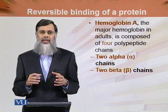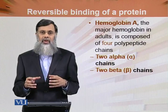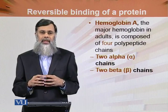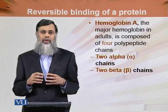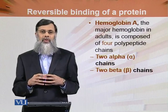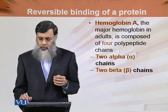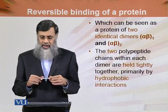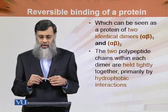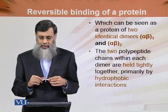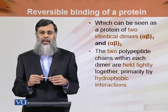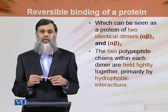We will discuss in detail the structure of hemoglobin A, which is mainly present in adults. It is composed of two alpha chains and two beta chains, and can be seen as a protein of two identical dimers: one is alpha-1 and beta-1, and the other is alpha-2 and beta-2.